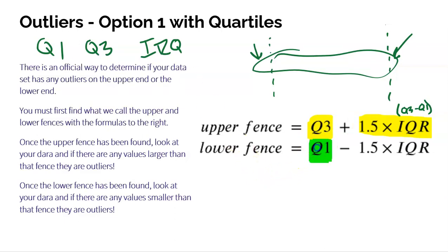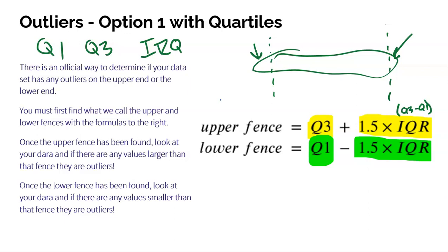Then we find the lower fence. We take Q1 and subtract 1.5 times the IQR, because we're going down lower. The IQR is Q3 minus Q1. This results in a number, and you go to your data and ask: are there any values below that lower fence? If yes, they are outliers. If you don't have anything above the upper fence or below the lower fence, you don't have any outliers. It's possible to have outliers on both sides, only one side, or multiple outliers.